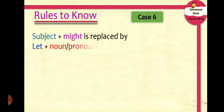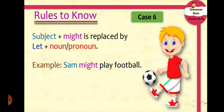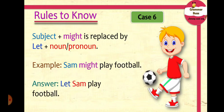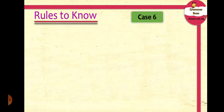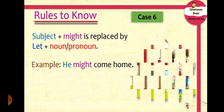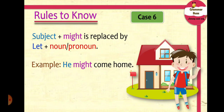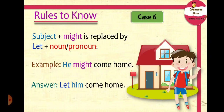Case 6: Subject plus 'might' is replaced by 'let' plus a noun or pronoun. Example: 'Sam might play football.' We replace the subject and 'might' with 'let' plus a noun or pronoun, giving us 'Let Sam play football' — here 'Sam' is a noun. Another example: 'He might come home.' Replacing it with 'let' and a pronoun, the sentence changes to 'Let him come home.'